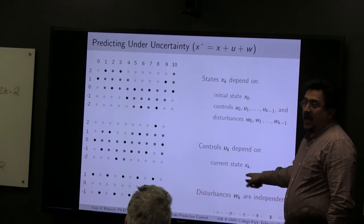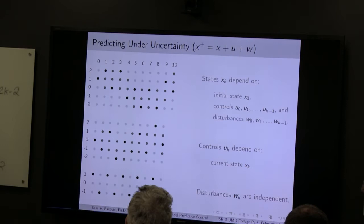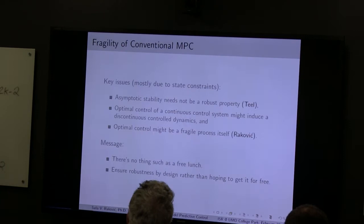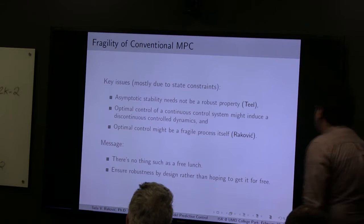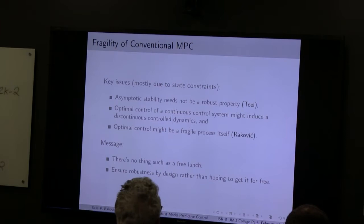What really matters is that control u_k is chosen given the knowledge of state x_k, so u_k is a function of x_k. Unlike in the certainty case, you cannot choose all u_k's at x_0; you have to choose u_k at x_k if you want to be less conservative. In terms of the fragility of conventional MPC: the difficulty arises due to state constraints, and there are three key facts. The first is that asymptotic stability is not necessarily a robust property — established by Andy Teel and his group. Arbitrarily small perturbations, when you have a constraint, can cause trajectories to go very far from the equilibrium.